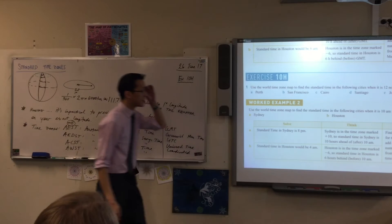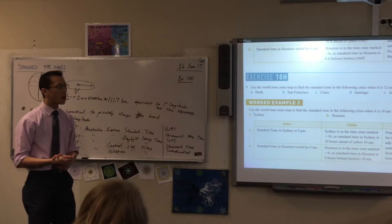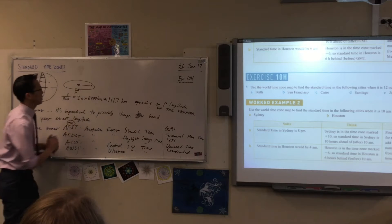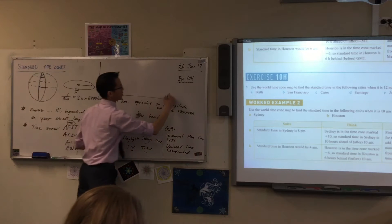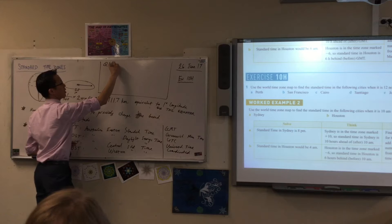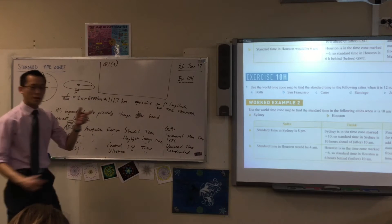Use the world time zone map to find the standard time in the following cities when it's 12 noon in Greenwich. Okay, so I'm going to sneak it in up to question 1 part A. Perth.